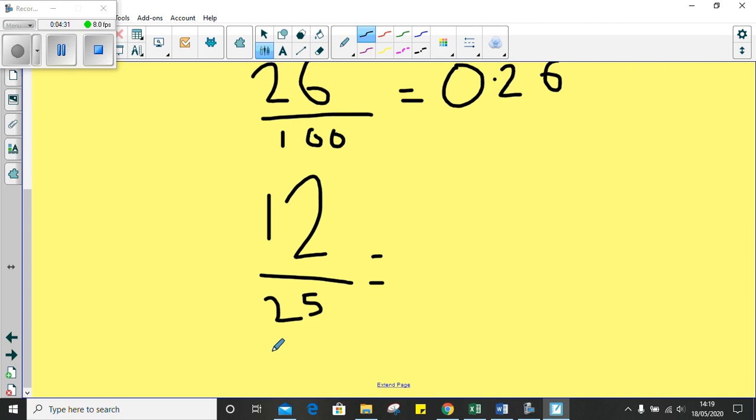Right, 12 twenty-fifths. To convert this one into a decimal, we need to do a couple of steps first. We're going to convert our fraction to hundredths. When we've converted it to hundredths, that makes it easier for us to convert it to a decimal. So, to get from twenty-five to a hundred, if we count in our twenty-fives, twenty-five, fifty, seventy-five, a hundred. I've multiplied twenty-five by four.